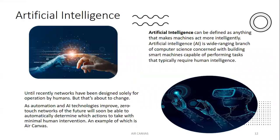This whole project belongs to the domain of artificial intelligence. Until recently, networks have been designed solely for operation by humans — like touch technology, where our touch is required for it to work. But this is about to change. As automation and AI technologies improve, zero-touch networks of the future will soon be able to automatically determine which actions to take with minimal human intervention, an example of which is AIR Canvas, our proposed project. AI can be defined as anything that makes machines act more intelligently. AI is a wide-ranging branch of computer science concerned with building smart machines capable of performing tasks that typically require human intelligence.